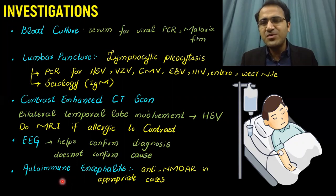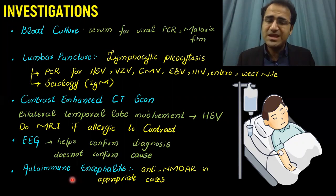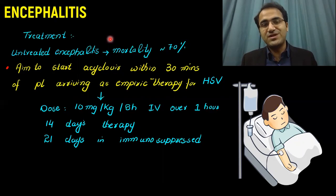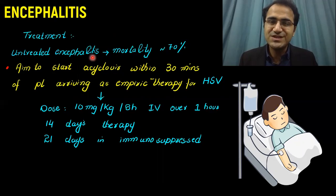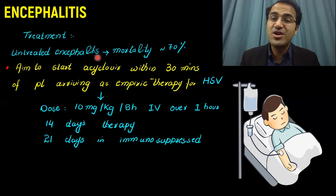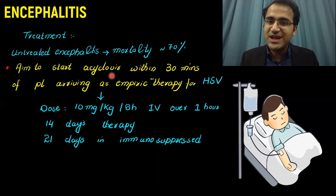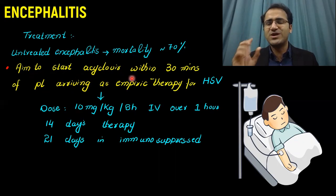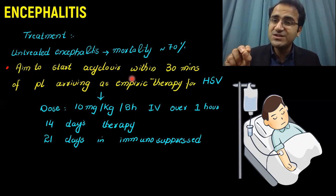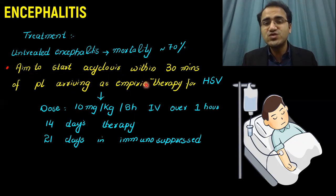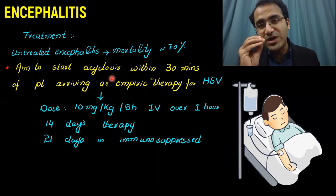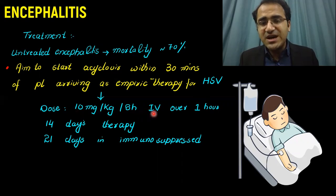Autoimmune Encephalitis is a rare cause but you should have it in your mind. Coming to the treatment of Encephalitis — treatment is very, very important. Untreated Encephalitis has a mortality of up to 70%, so the sooner the better: diagnose the patient as early as possible. Aim to start Acyclovir within 30 minutes of patient arriving as empiric therapy for herpes simplex virus. Dose can be 10 mg per kg, 8 hourly IV over 1 hour. 14 days therapy is given in normal individuals, and for immunocompromised patients 21-day therapy is required.